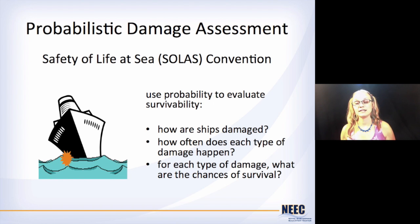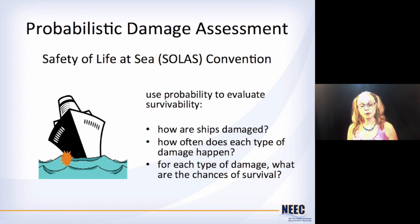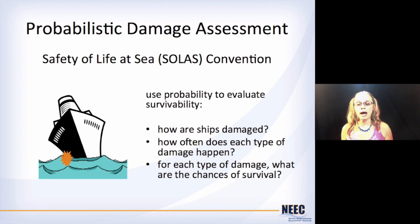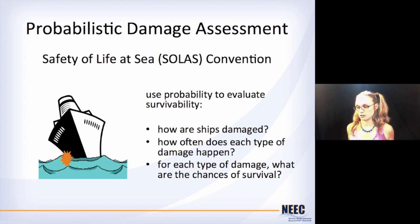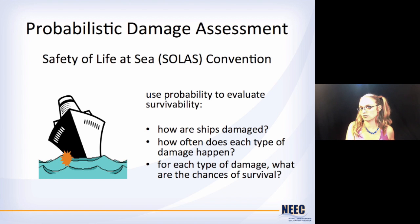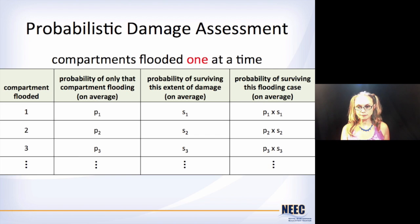The Safety of Life at Sea convention first met after the Titanic sank, because the Titanic did not have enough lifeboats for all of its passengers. It's met every once in a while since then whenever something new comes about and big changes in the rules for classifying vessels are needed. Their recommendation after the Andrea Doria was that we needed to use probability to evaluate the survivability of our ships — figure out how ships are damaged, how often that damage occurs, and then given that kind of damage, what are the chances that you're going to survive it.